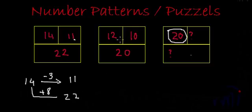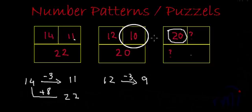The second box is given to us to check our logic. So here if we start from 12 and we do minus 3, we are getting 9. But here we have 10, so this link is not correct.